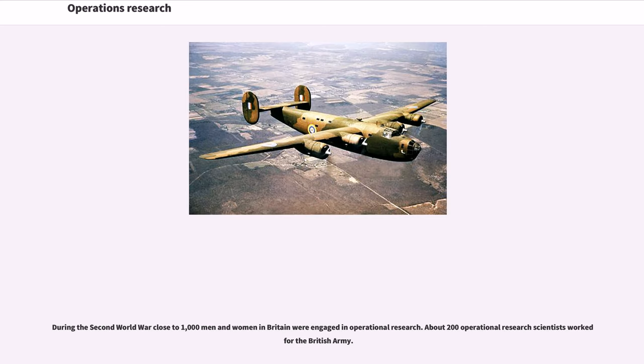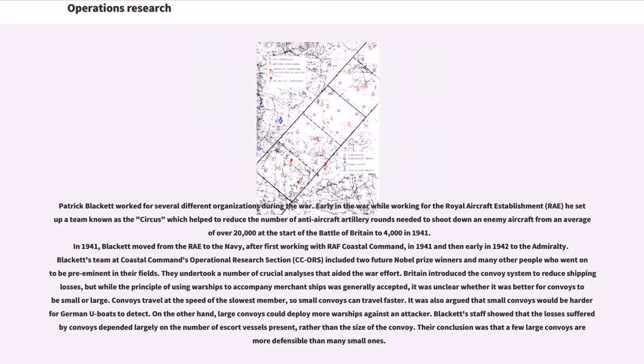During the Second World War, close to 1,000 men and women in Britain were engaged in operational research. About 200 operational research scientists worked for the British Army. Patrick Blackett worked for several different organizations during the war. Early in the war while working for the Royal Aircraft Establishment, he set up a team known as the Circus which helped to reduce the number of anti-aircraft artillery rounds needed to shoot down an enemy aircraft from an average of over 20,000 at the start of the Battle of Britain to 4,000 in 1941.